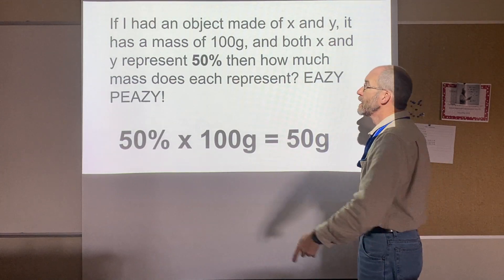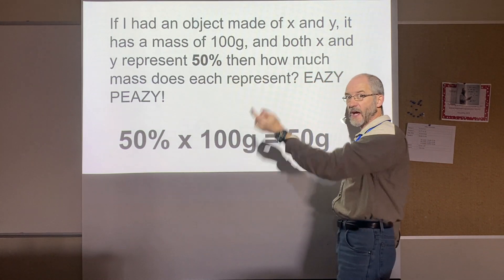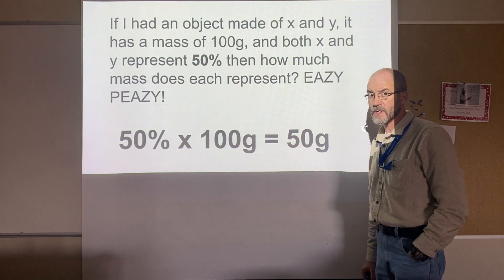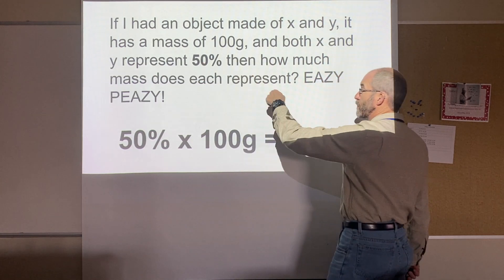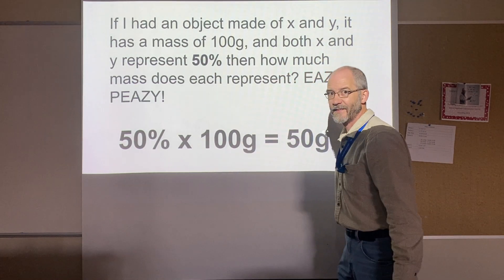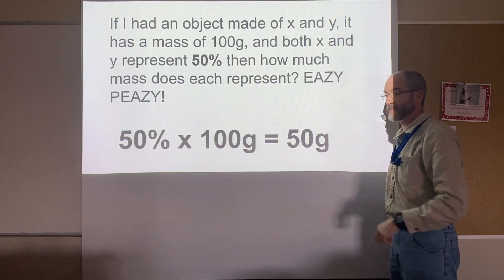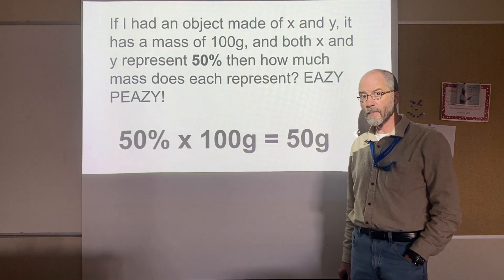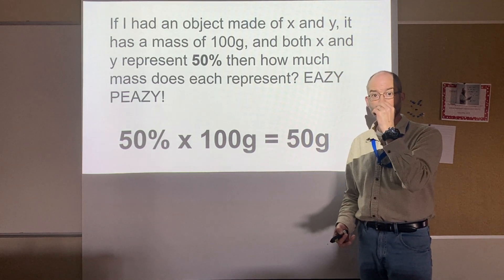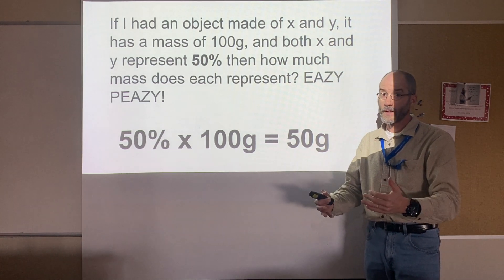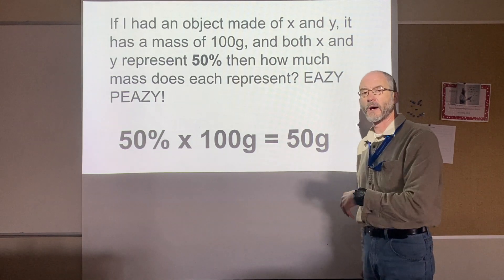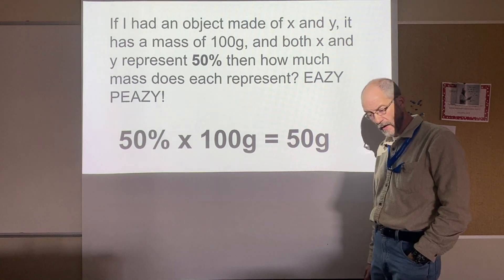Think about this: if I had an object made of x and y with a mass of 100 grams, and both x and y represent 50%, that's extremely easy math. How much mass does each represent? If they each represent 50% of 100 grams, then 50% of 100 is 50 grams. You know how much mass both x and y have, but I never told you that at the beginning — I just told you the percent composition they represented. The first two problems gave you masses; now what if you wanted to know mass but only knew percent composition? Yes, we can do that.